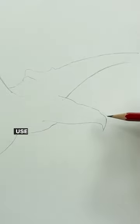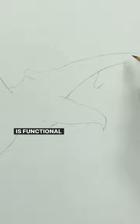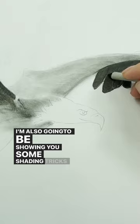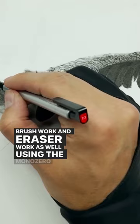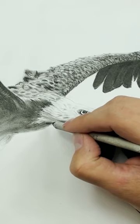I'm showing you how you can use the reference photo and reference points throughout drawing out your basic shape so that you can get a shape that is functional and proportional. I'm also going to be showing you some shading tricks and some brushwork and eraser work as well. Using the MonoZero eraser, I'm going to be showing you how you can retrieve high values and use implied lines throughout the drawing so that you can really make this render realistic.